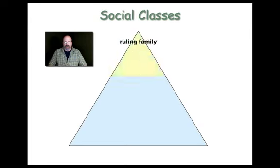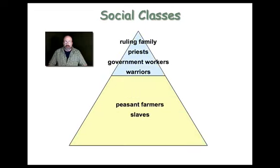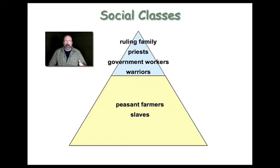That brings us to social class. At the top would have been the ruling family — the king, priests, government workers, and warriors. Below that were peasant farmers and slaves, who were the majority of the population. This will become more complicated as we get into the Zhou, Han, and Tang dynasties, but this is a reflection of what the feudal class structure looked like during the Shang and possibly even the Zhou dynasty.